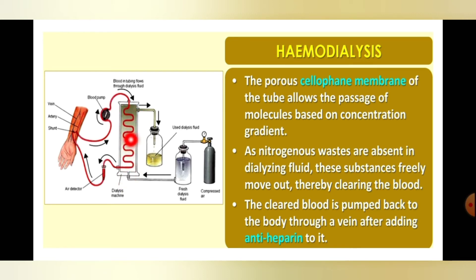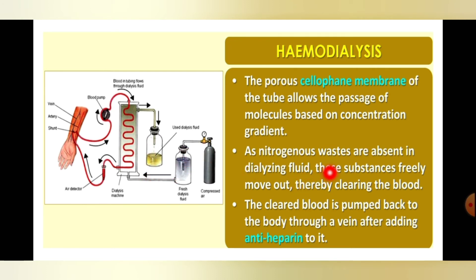The tube is a cellophane tube with many pores, and inside it is surrounded by dialyzing fluid. Molecules move based on concentration gradient — from a region of higher concentration to lower concentration. Since urea concentration is high in impure blood and absent in dialyzing fluid, urea moves out of the blood into the dialyzing fluid, thereby clearing the blood.